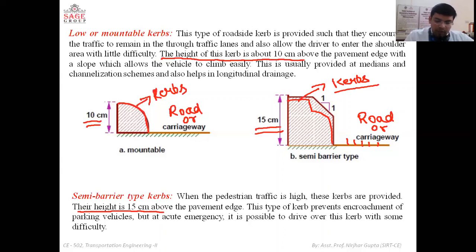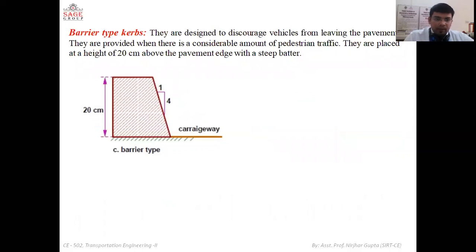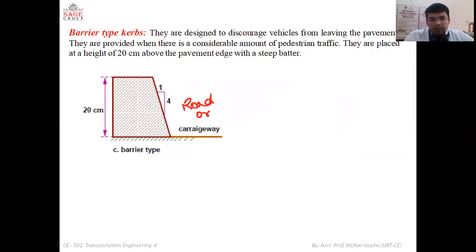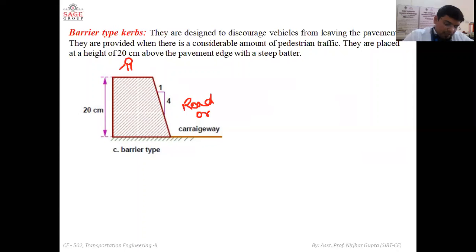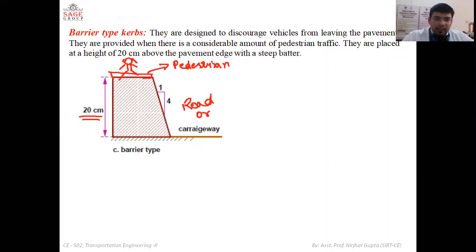The third type is the barrier type curb. These are designed to discourage vehicles from leaving the pavement, keeping vehicles in their lane. They are provided where there is a considerable amount of pedestrian traffic, and the top surface can be used for pedestrian use. The height of the barrier type curb is 20 cm, creating a strong barrier to the surface.